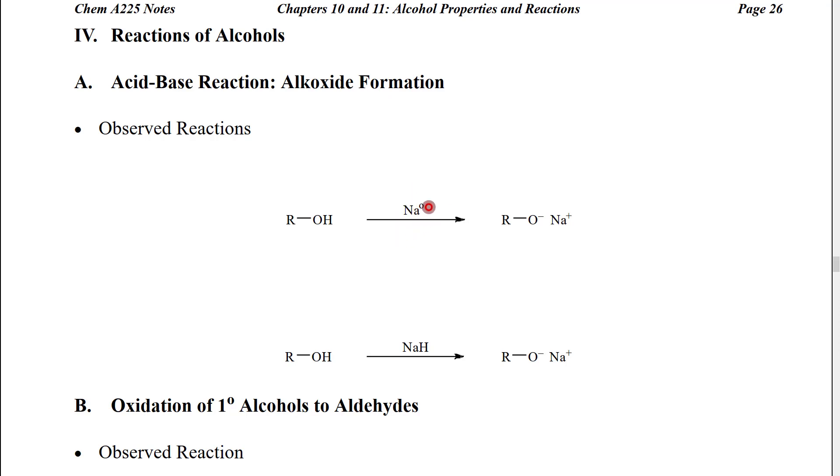We mix it with sodium metal. The metal starts to transfer electrons in, the bond breaks. We make hydrogen gas and we make the carbon oxygen negative ion which is called alkoxide ion paired up with a sodium plus counter ion.